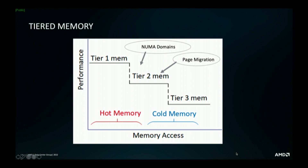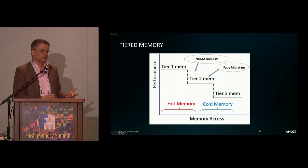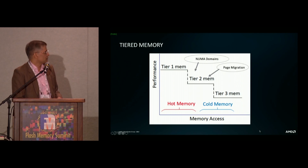When I talk about tiered memory — we can call it hot, warm, cold, or just hot and cold. One way of mitigating the longer latencies is to do some sort of page migration where you detect if a particular page is looking hotter and move it to closer memory, closer in latency. If a certain page is not getting many accesses, you demote that page to a colder memory tier.